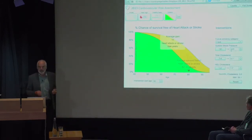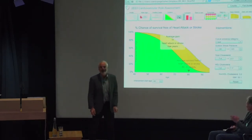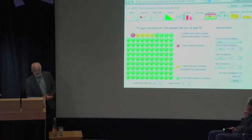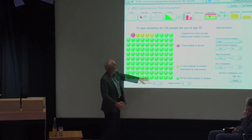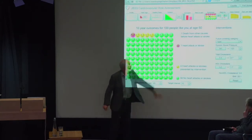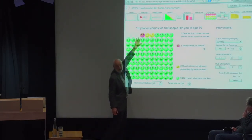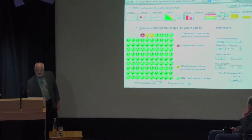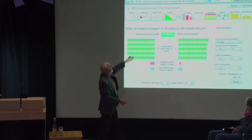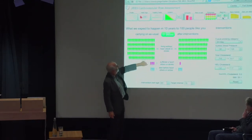In the spirit of one size does not fit all, we then put in every bit of communication device we could think of. If you like smiley faces — icon arrays — you can have those. This is 100 people like you: by age 50, one will be dead of something else, one will have had a heart attack or stroke, but four people like you would have had a heart attack or stroke but now won't because you've taken your interventions. But if you don't stop smoking, that goes back. So in 20 years, this shows how many will be living without a heart attack or stroke, how many will have had one, and the reduction if you intervene.